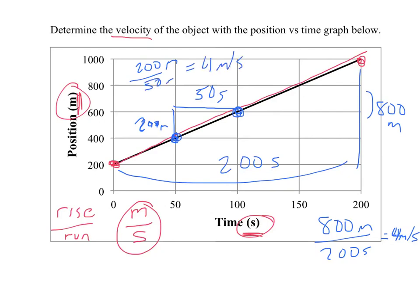It doesn't matter which two points we pick along this line. If you calculate the slope, assuming you pick good points, you should always get the same velocity: 4 meters per second.